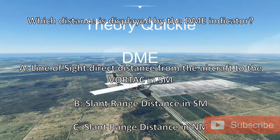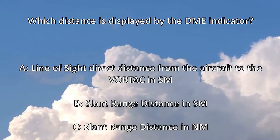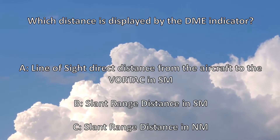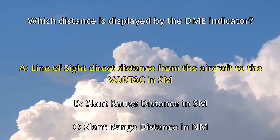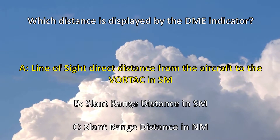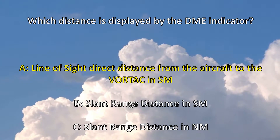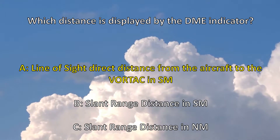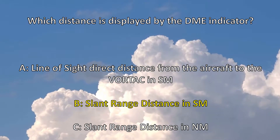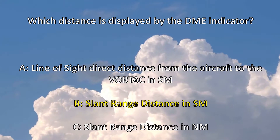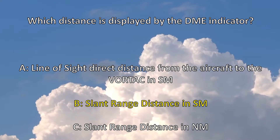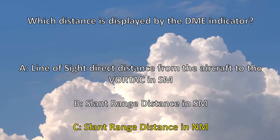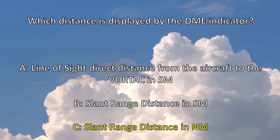Here's a question from the FAA database. Which distance is displayed by the DME indicator? A: Line of sight direct distance from the aircraft to the Vortac in statute miles. B: Slant range distance in statute miles. Or C: Slant range distance in nautical miles.